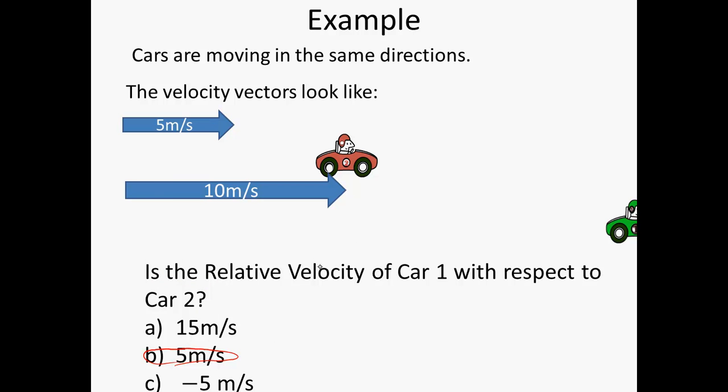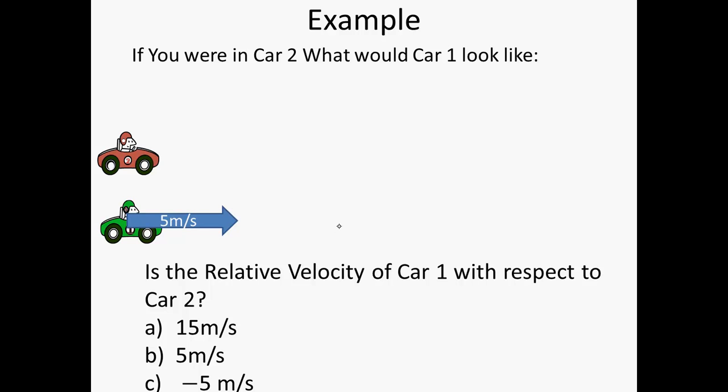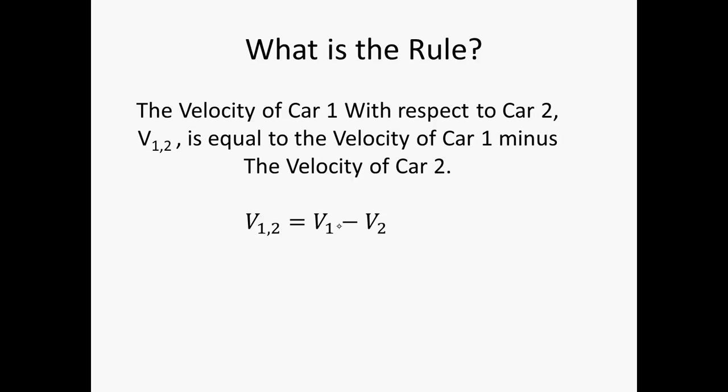Now, how do we get that? If you were in car two, this is what a car would look like. It would look as though it just moved away at five meters per second. Now, the formula is that the relative velocity of one with respect to two is given by V1 minus V2.